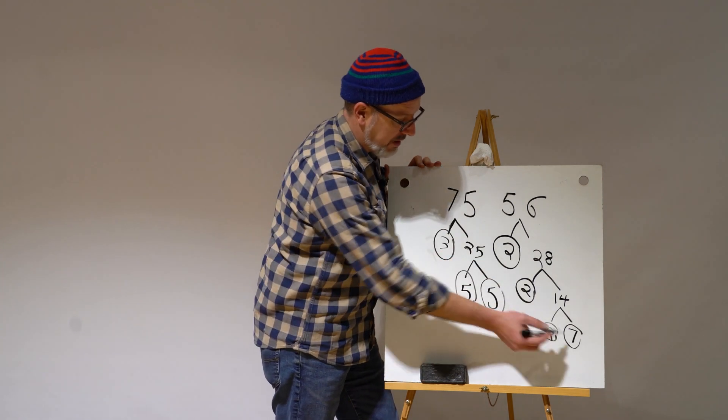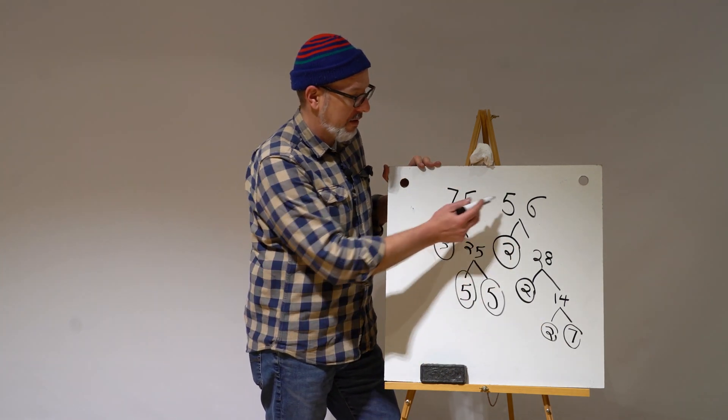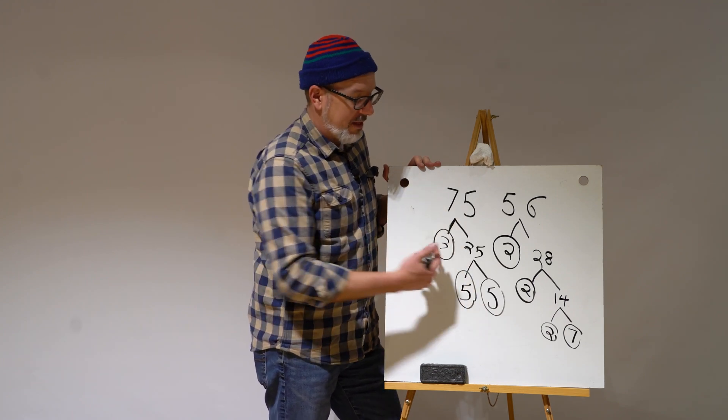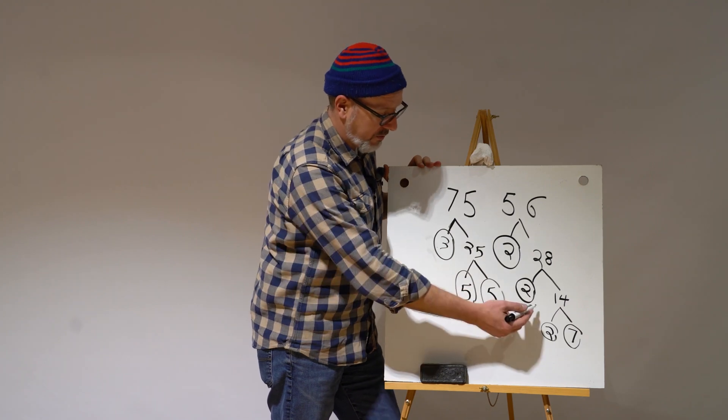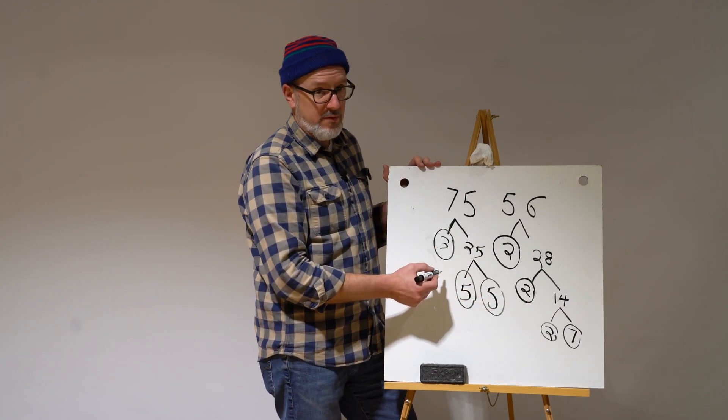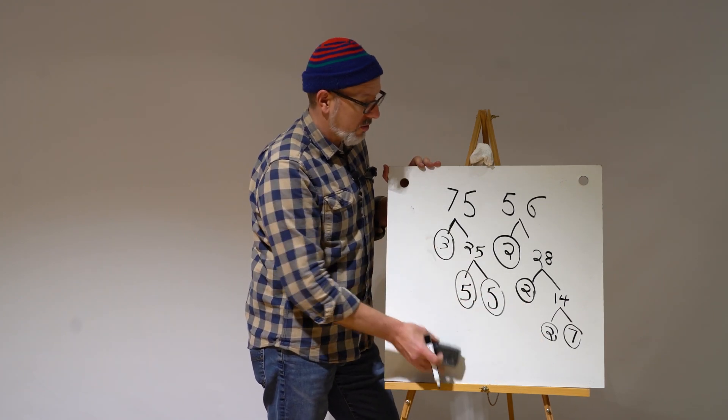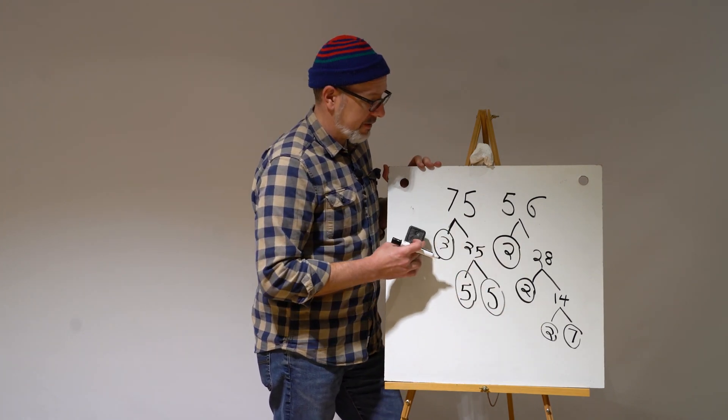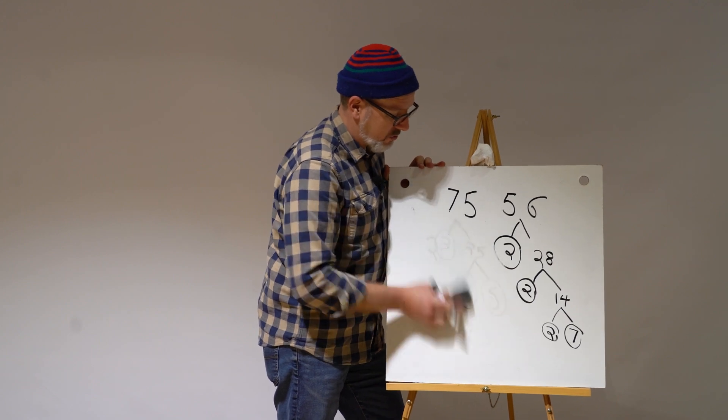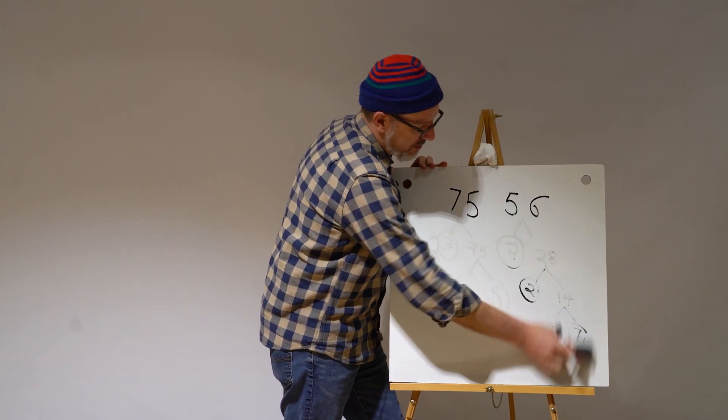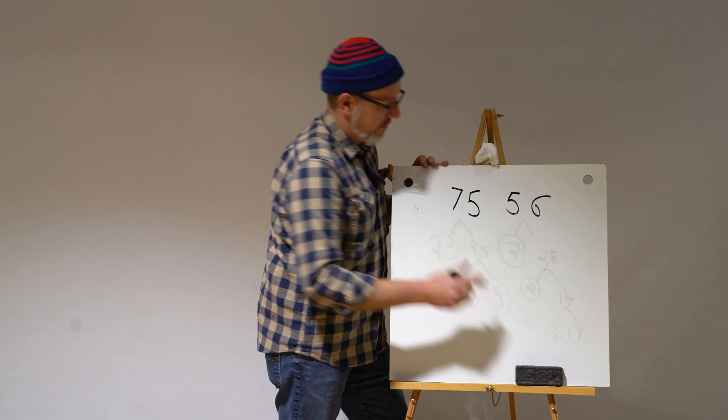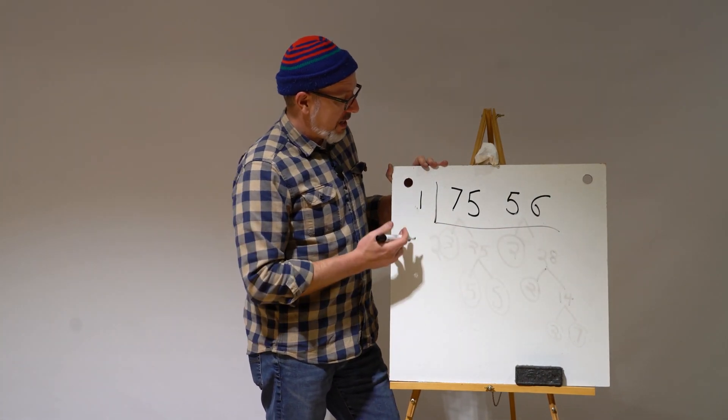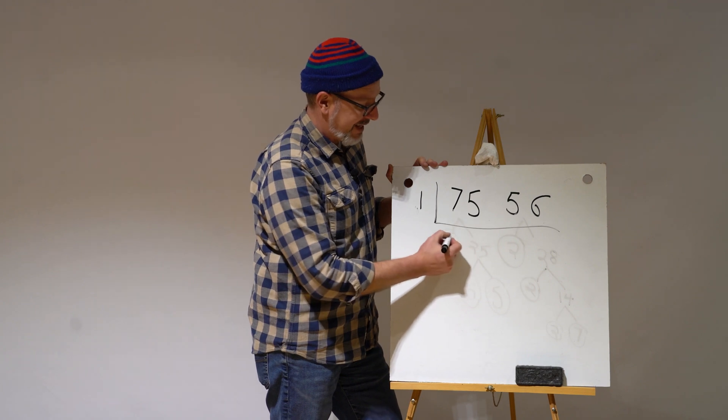Now we're going to compare. We have 2, 2, 2, 7 are factors of 56. And we have 3, 5, 5 are factors of 75 that are prime. None of them match. There's no 3s over here, no 5s over here. There's no 2s or 7s over here. So there are no common factors that are shared between 75 and 56, except for 1. It's a very special number. It's the loneliest number. If I divide 1 into 75, I get 75.